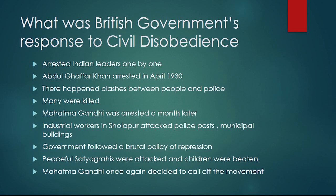Abdul Ghaffar Khan was arrested in April 1930. There were clashes between people and police, and many people were killed. After one month, Gandhi was also arrested in 1930, following the Dandi March. The industrial workers of Sholapur attacked police posts and municipal buildings. To repress them, the government followed a brutal policy where peaceful satyagrahis were attacked. Seeing all this, Mahatma Gandhi decided to call off the movement. A question here: why did Mahatma Gandhi decide to call off the Civil Disobedience Movement?